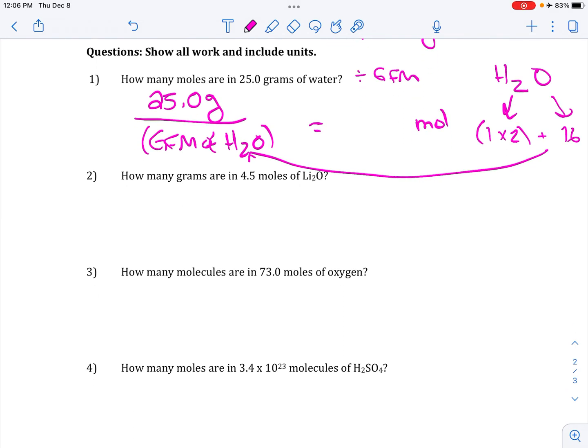How many grams are in 4.5 moles? OK, now we need to go from moles to grams, which means you're going to multiply by GFM. So 4.5 moles times we need the GFM of this, lithium oxide.